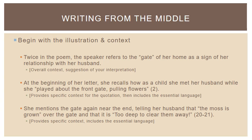Then a couple of lines that each provide the specific context for each quotation and include the essential language from the text you want to cite: "At the beginning of her letter, she recalls how as a child she met her husband while she 'played about the front gate pulling flowers.'" Then: "She mentions the gate again near the end, telling her husband that 'the moss is grown' over the gate and that it is 'too deep to clear them away.'" Both sentences provide some context — they don't just quote, but explain why she is saying those words and what situation these lines occur in, while providing the specific language we need: moss, growth, gate, deep, play.